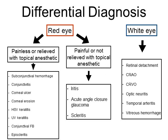It is important to consider the differential diagnosis for atraumatic eye conditions. Traditionally we divide the conditions into red eye and white eye. Under the white eye category we have retinal detachment, central retinal artery occlusion, central retinal vein occlusion, optic neuritis, temporal arteritis, and vitreous hemorrhage.